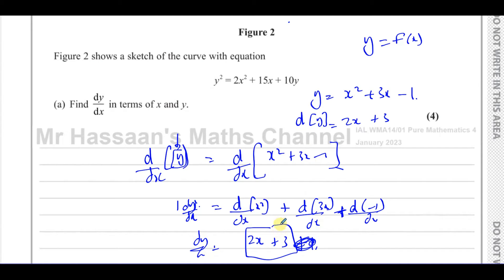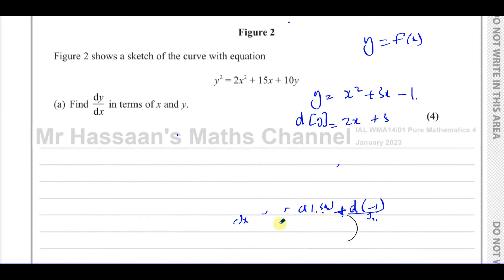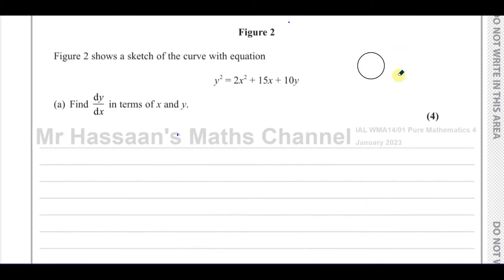We don't actually go through all of that process explicitly when differentiating — we just write dy/dx equals 2x plus 3, as we've been doing since IGCSE. But this is the actual mathematical process: we are differentiating each term separately with respect to x, including the y term. What we do to one side of the equation, we do to the other, just like when we're solving equations or integrating. We're going to apply that now to this curve.